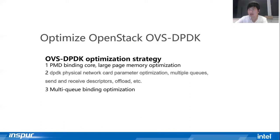Second, DPDK physical network card parameter optimization. You need to configure the physical network card module's send and receive queue parameters, and offload parameters. Third, multi-queue binding core optimization — you need to optimize the distribution of the virtual machine network card and physical network card receive queues across CPU cores. For these optimization points, we have made automatic optimization tooling, though we also support manual configuration adjustments according to user needs.